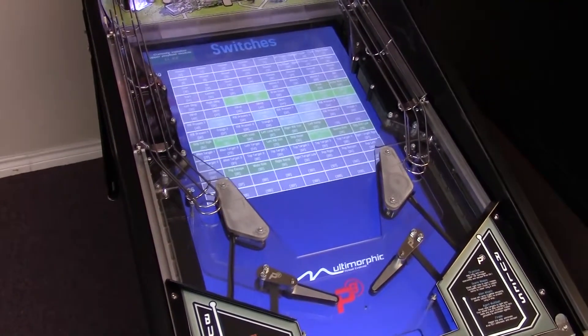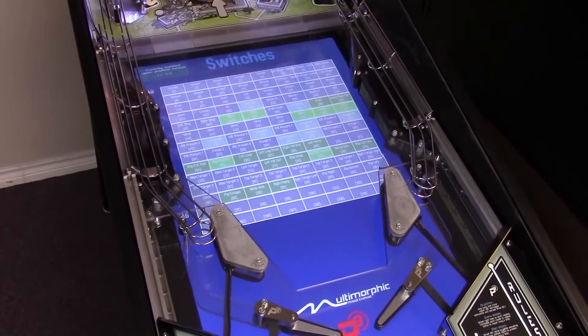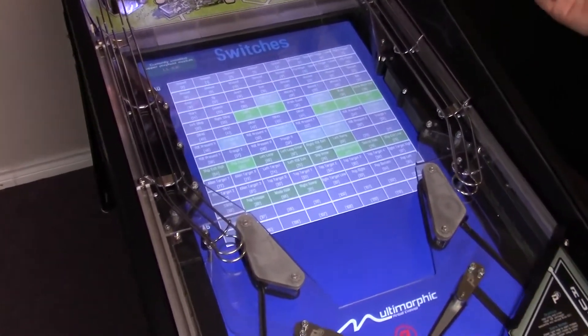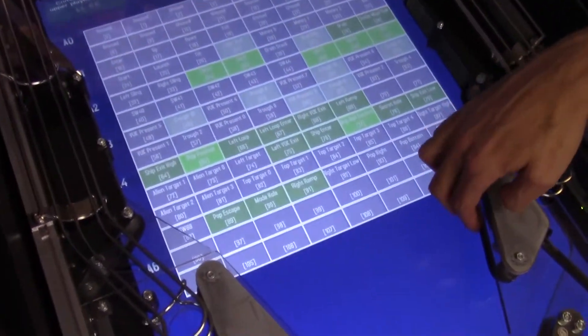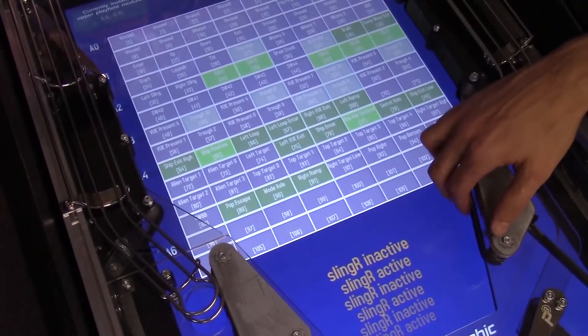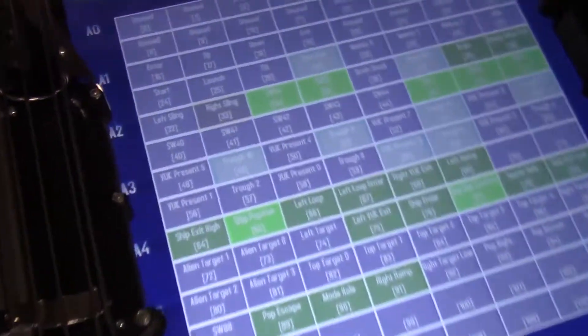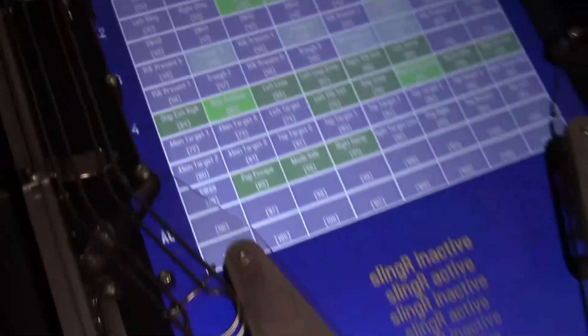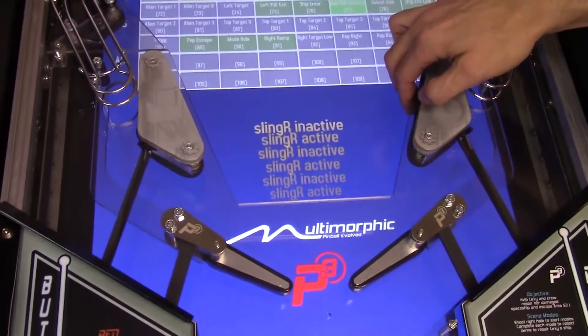I selected switches, so now we're presented with all of the switches in the machine. We can test them manually with our hand by, for instance, pressing the right slingshot switch, and you'll see the box up here change colors as we activate and deactivate the switch. You'll see a history of the events lower on the screen.